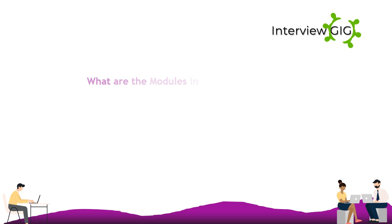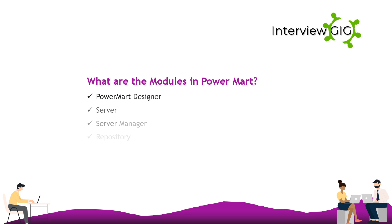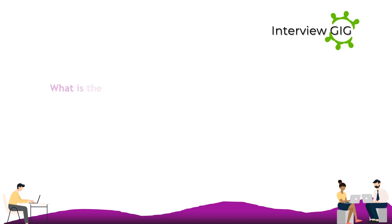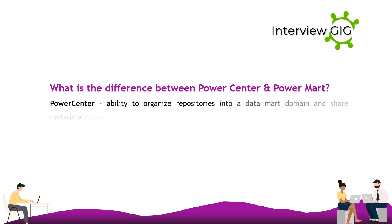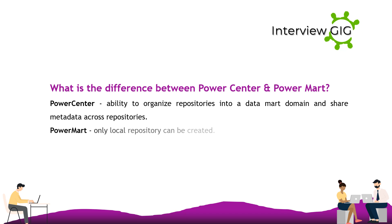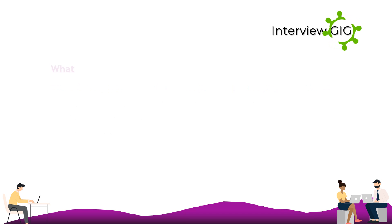The modules in Power Mart are: Designer, Server, Server Manager, Repository, and Repository Manager. The difference between Power Center and Power Mart is that Power Center has the ability to organize repositories into a data mart domain and share metadata across repositories, while Power Mart only allows a local repository to be created.